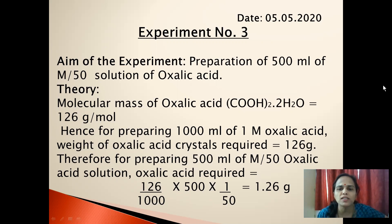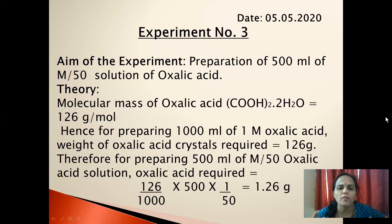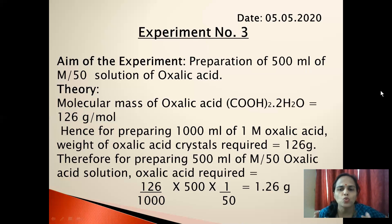For preparing 1000 milliliter of 1 molar oxalic acid, the weight of oxalic acid crystals required equals 126 grams. Therefore, for preparing 500 milliliter of M by 50 oxalic acid solution, oxalic acid required equals 126/1000 × 500 × 1/50, which comes out to be 1.26 grams.